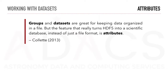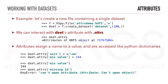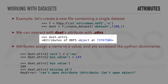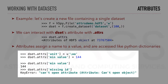Groups and datasets are great for keeping data organized, but the feature that really turns HDF5 into a scientific database rather than just a file format is attributes. Attributes can be attached to any kind of object linked into the HDF5 tree structure — groups, datasets, and even named data types. For example, we can create a new file containing a single dataset called dset, and interact with its attributes using .attrs. Attributes assign a name to a value and are accessed like Python dictionaries, with examples of setting and accessing attributes.